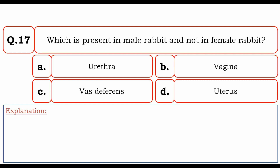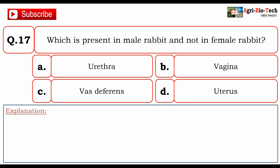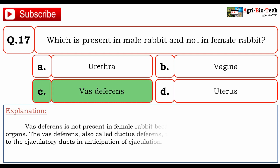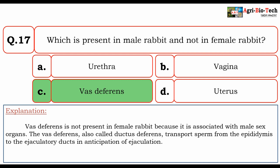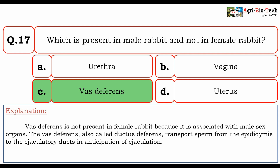Which structure is present in male rabbit but not in female rabbit? Options: A. urethra, B. vagina, C. vas deferens, D. uterus. The correct option is C. vas deferens. Vas deferens is not present in female rabbit because it is associated with male sex organs. The vas deferens, also called ductus deferens, transports sperm from the epididymis to the ejaculatory duct in anticipation of ejaculation.